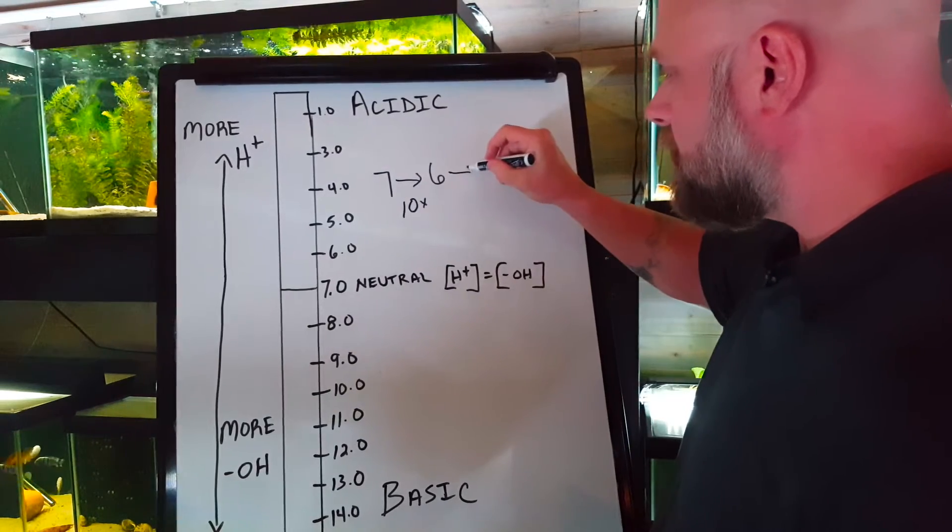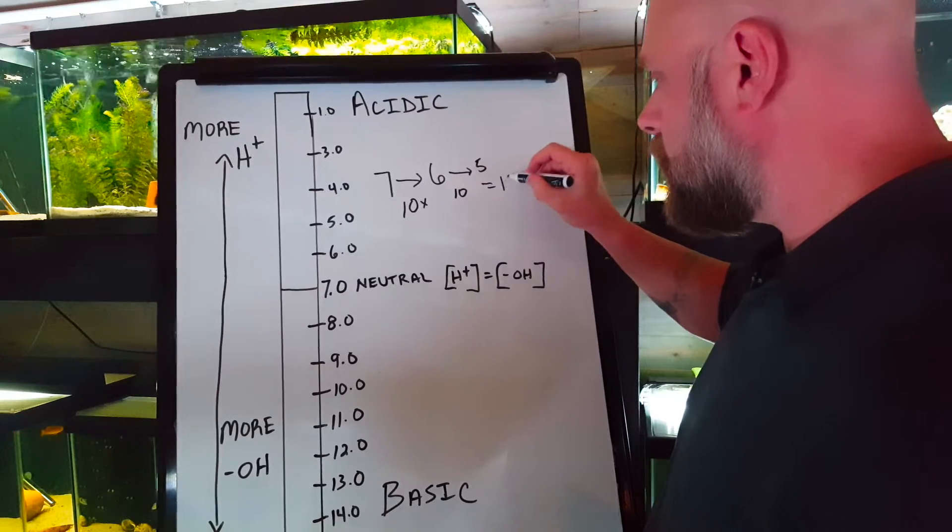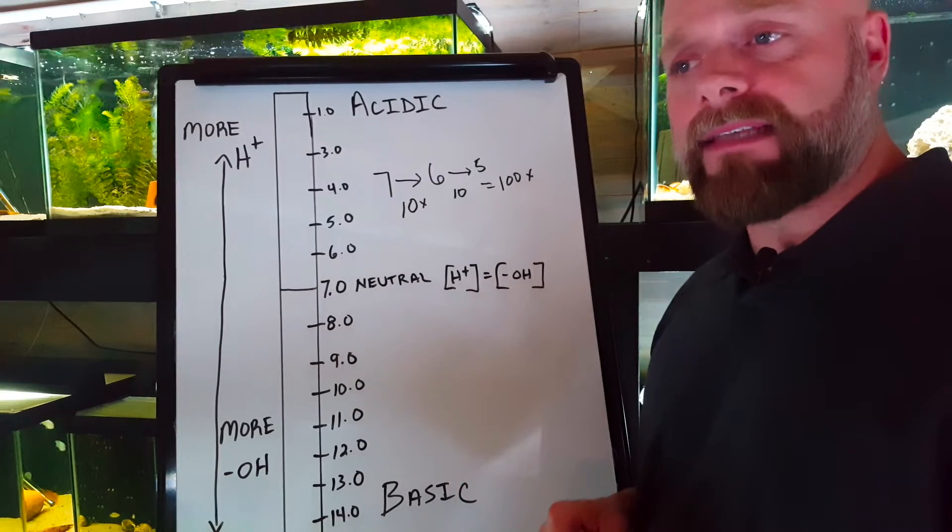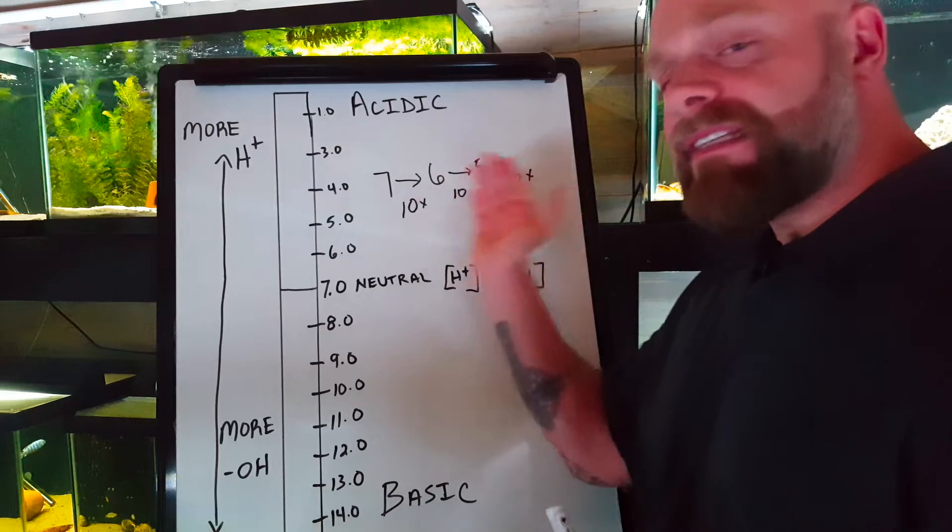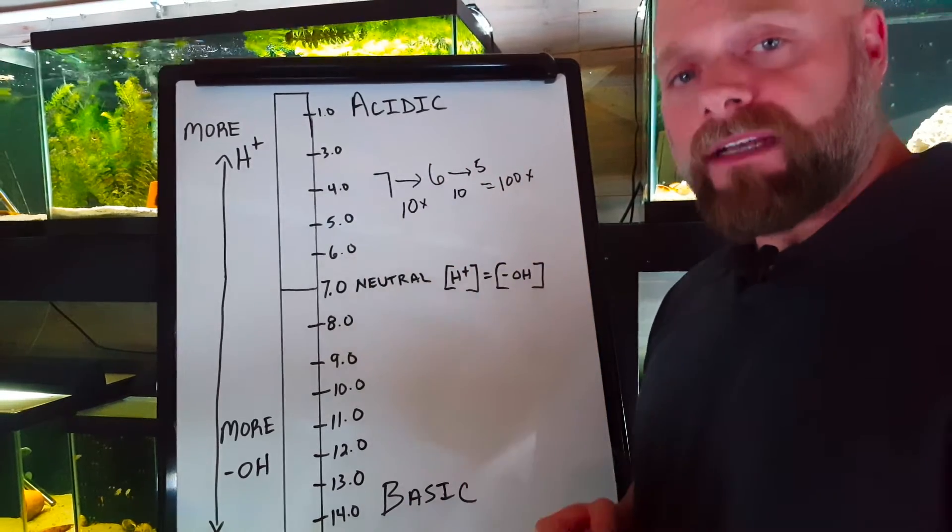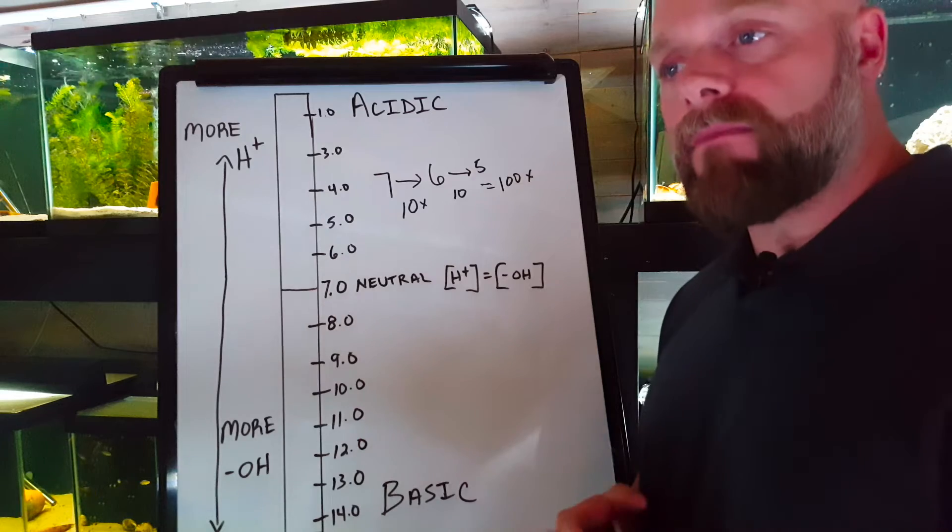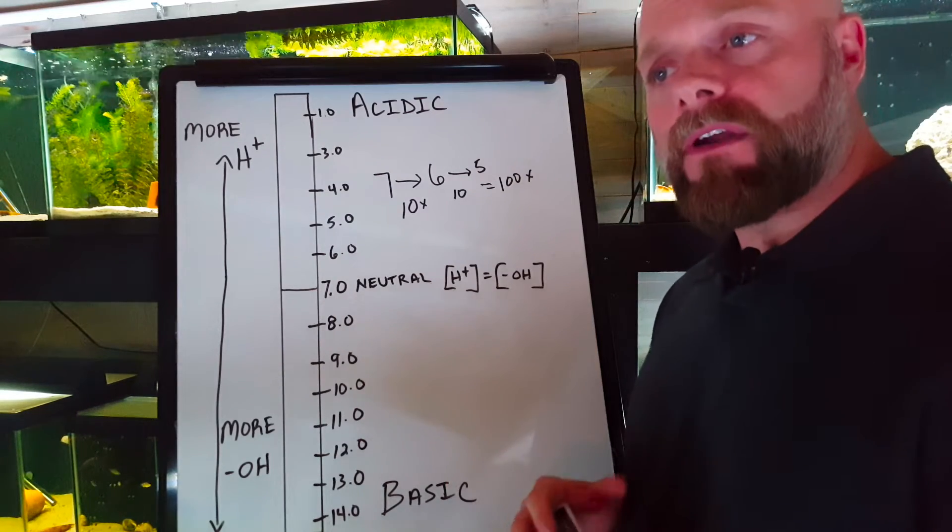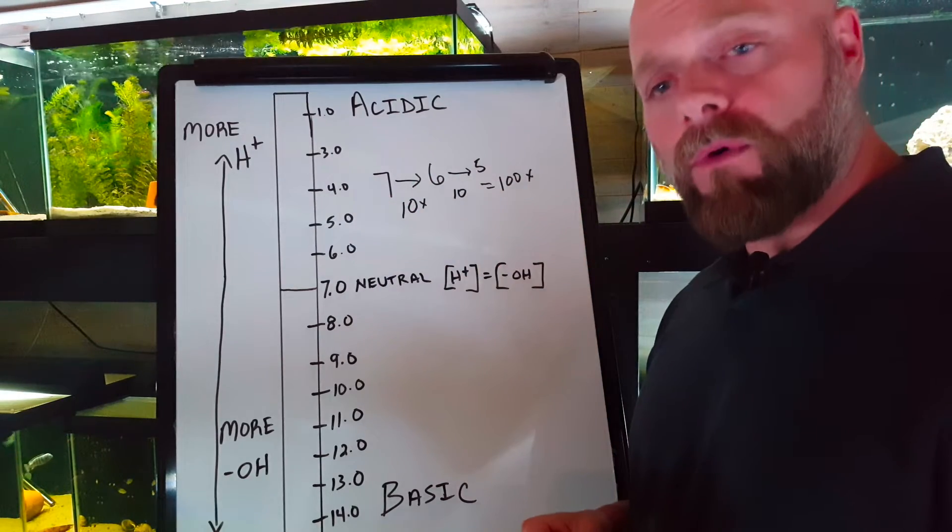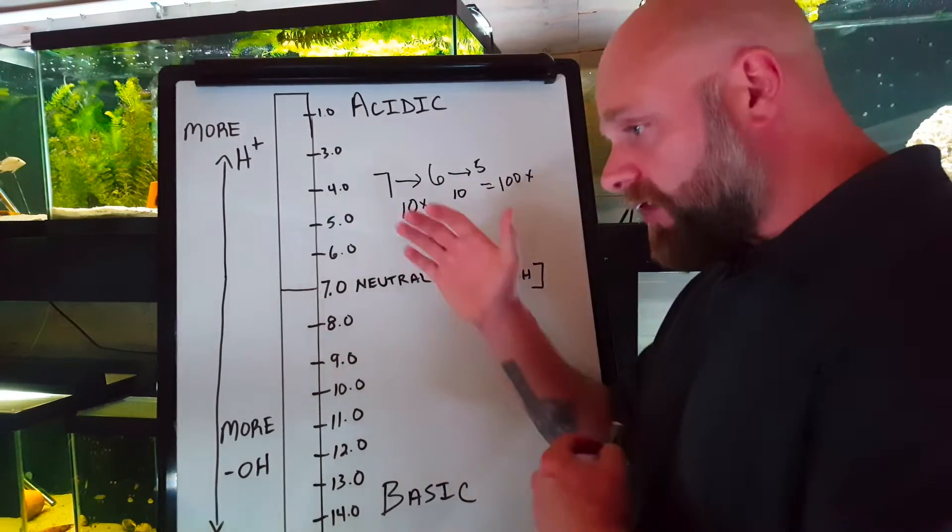If we were going to go from seven to five, that's another 10 times change, and so that would equal 100 times difference in the number of hydrogen ions and hydroxide ions in that solution. The point here is that if this is constantly fluctuating, that's a lot of change. That's what stresses out our fish. If we just keep it consistent, but within the range of pH that a fish can enjoy, that's going to go a lot further in keeping those fish healthy than it would be to constantly have this fluctuating back and forth. We tend to stay away from adding chemicals to our water that would adjust our pH.